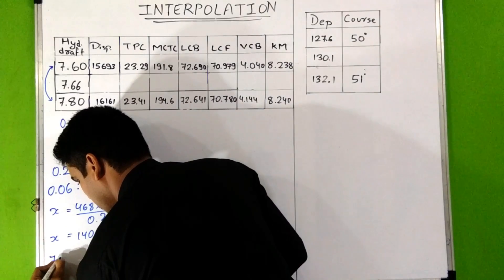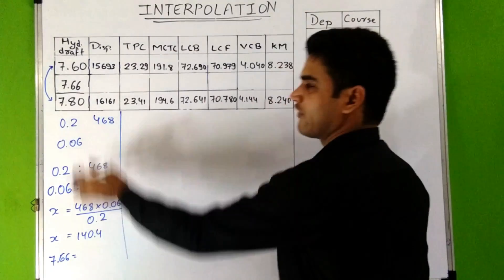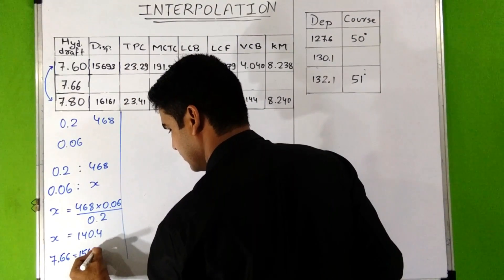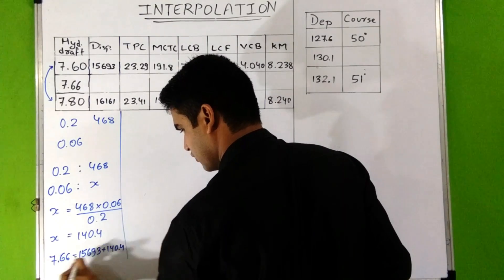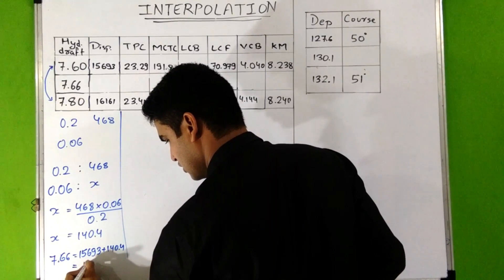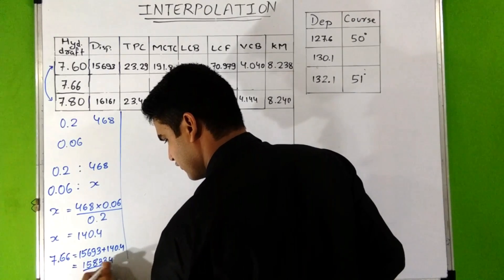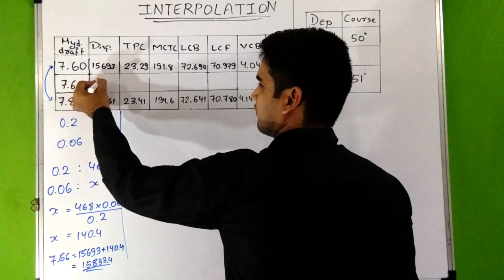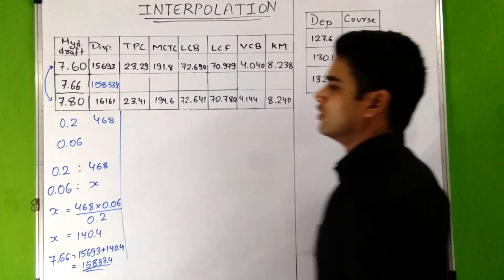To find the displacement value for 7.66 meters, we add x to the displacement at draft 7.6, which is 15693. So 15693 plus 140.4 gives us 15833.4. The displacement for draft 7.66 meters is 15833.4.